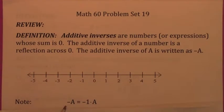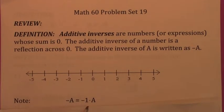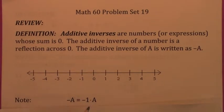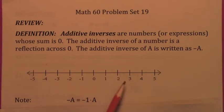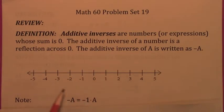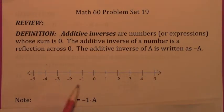This has come up before. The additive inverse of a number is the same thing as multiplying the number by negative one. You could think of the negative integers as just the additive inverses of the positive integers. The additive inverse of three is negative three, and it can be obtained by simply multiplying three by negative one.